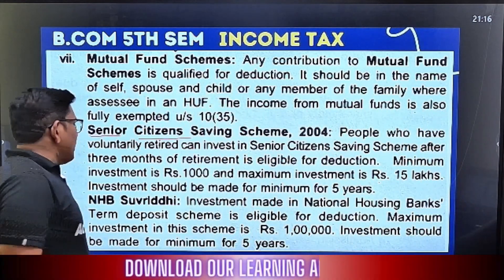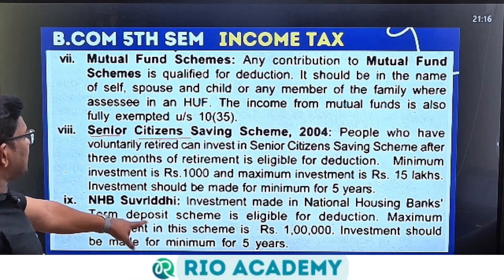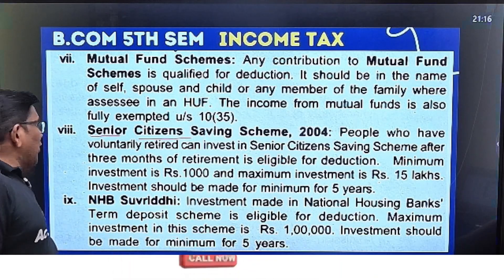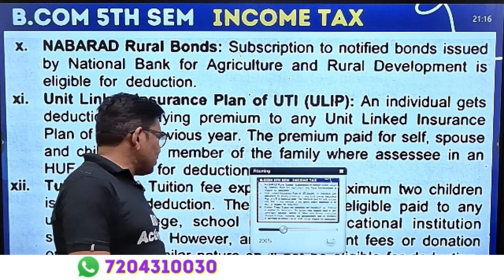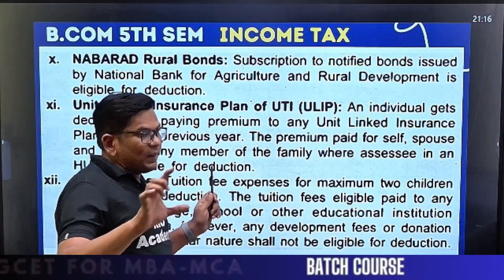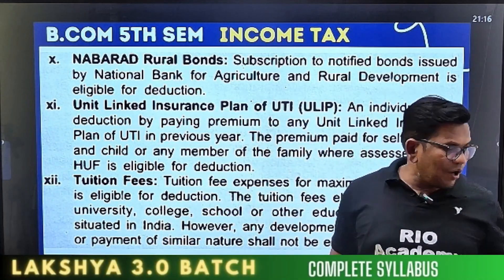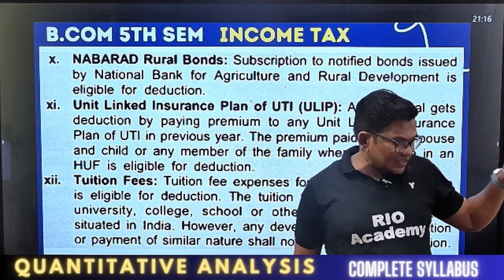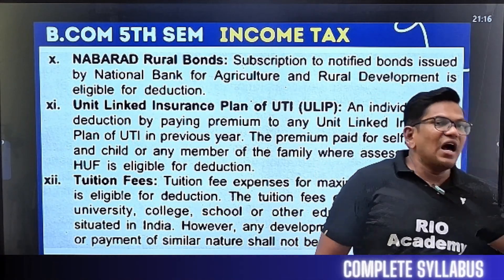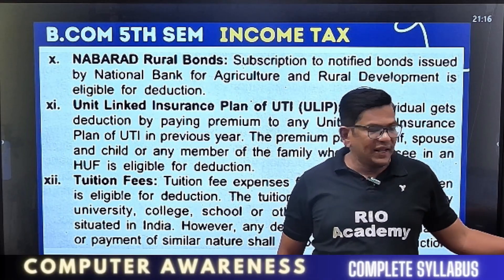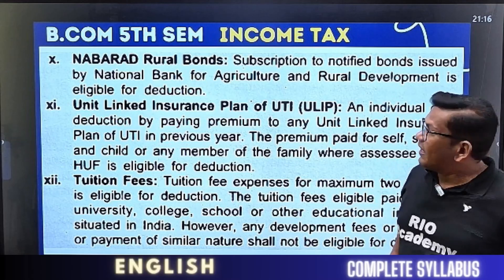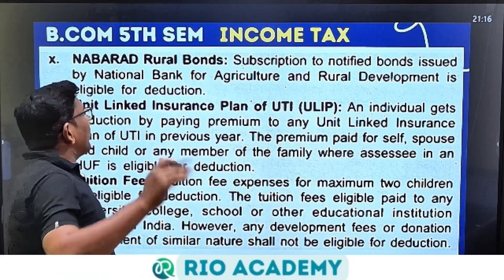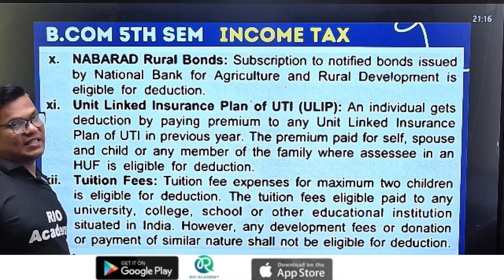Next is NHB — National Housing Board. Investment made in a National Housing Board term deposit is also eligible for deduction. Maximum investment is 1 lakh, for a 5-year deposit. Next is NABARD Rural Bond — subscription to notified bonds issued by National Bank for Agriculture and Rural Development is eligible for deduction.